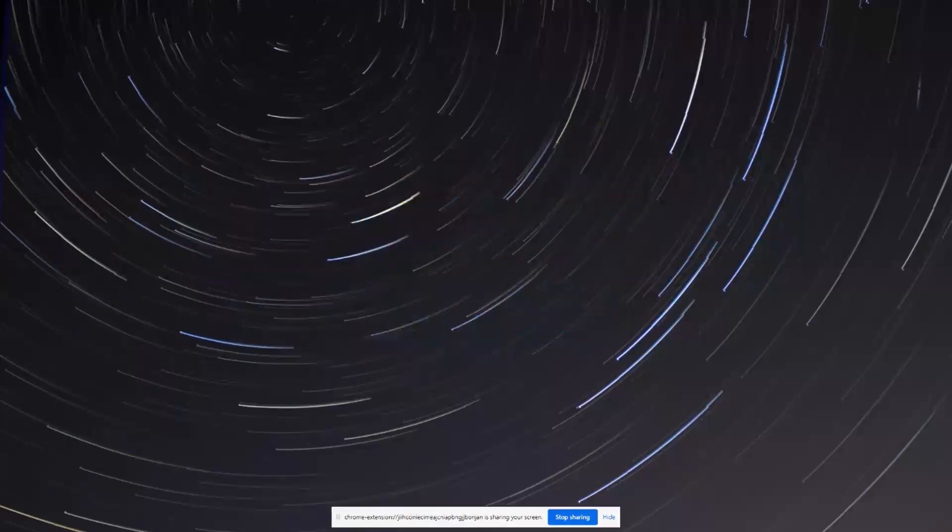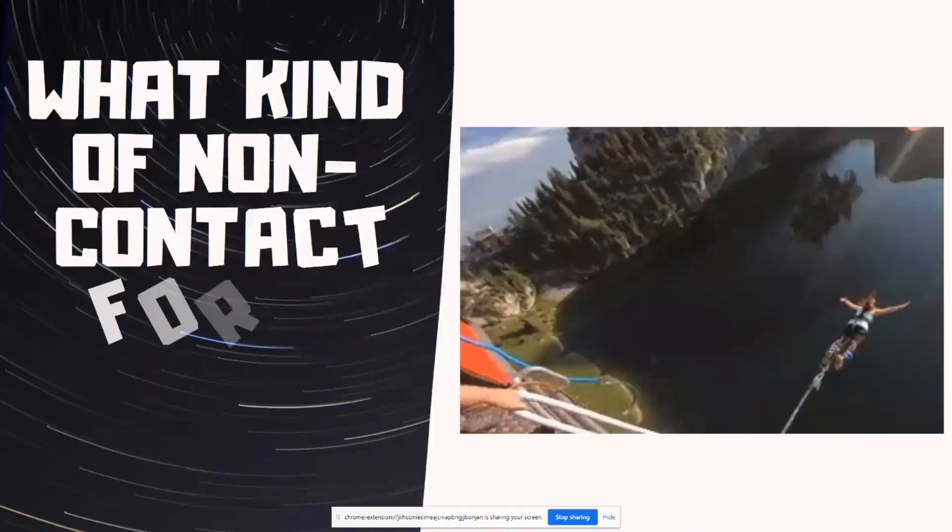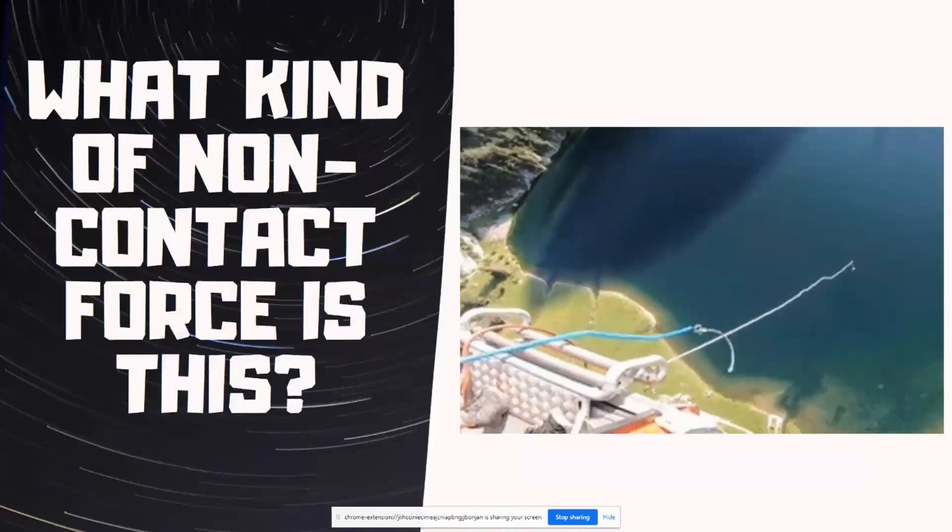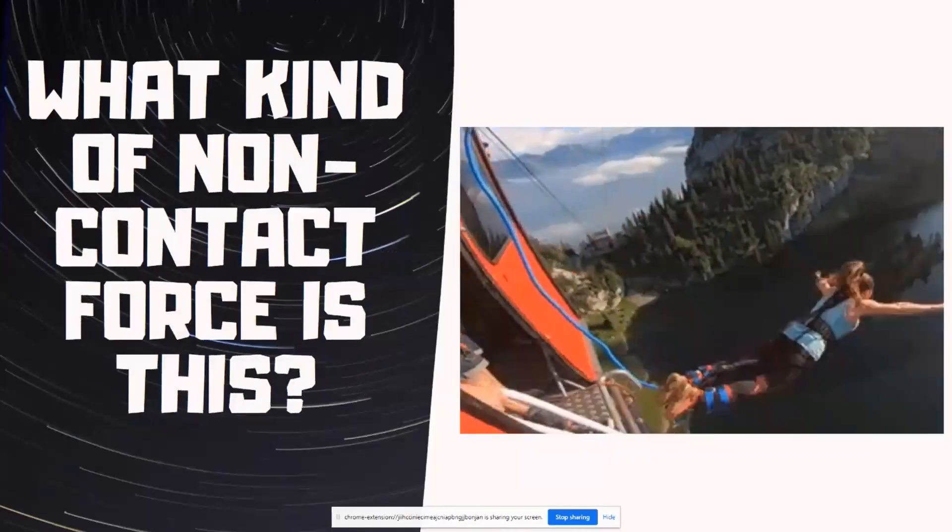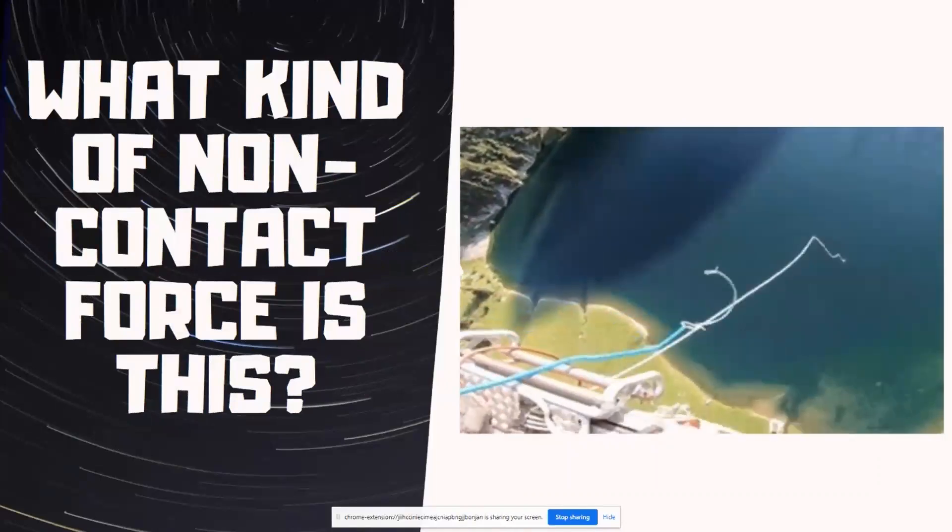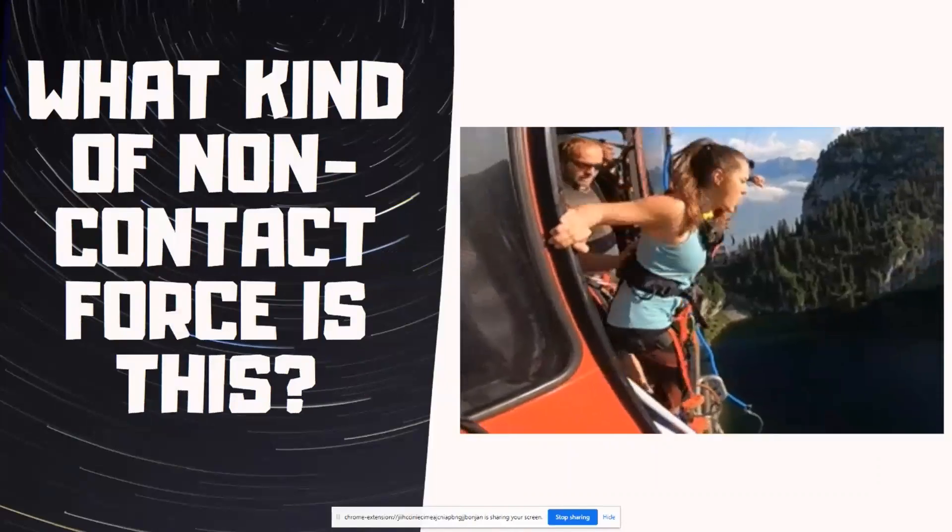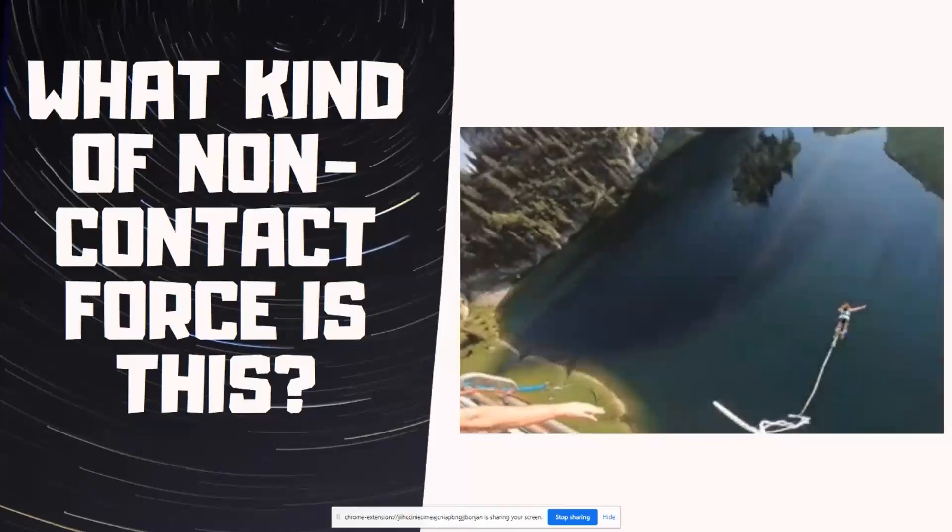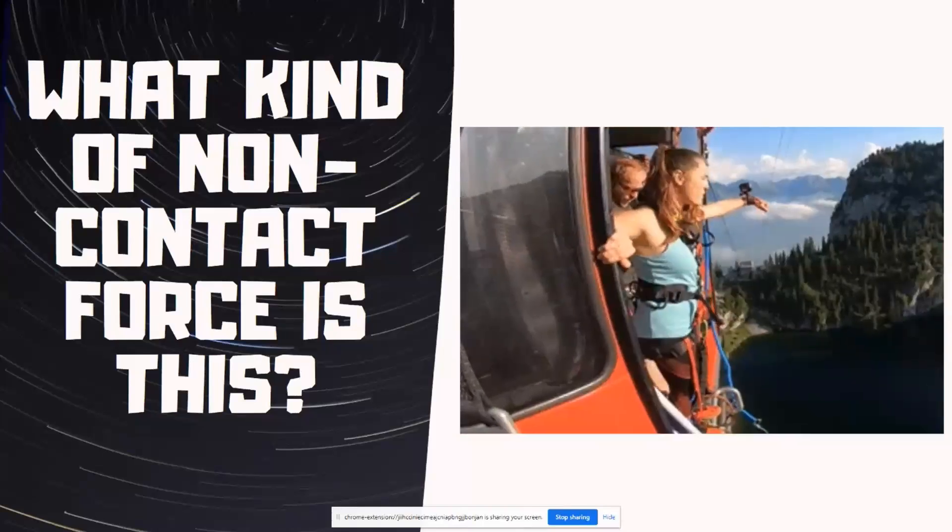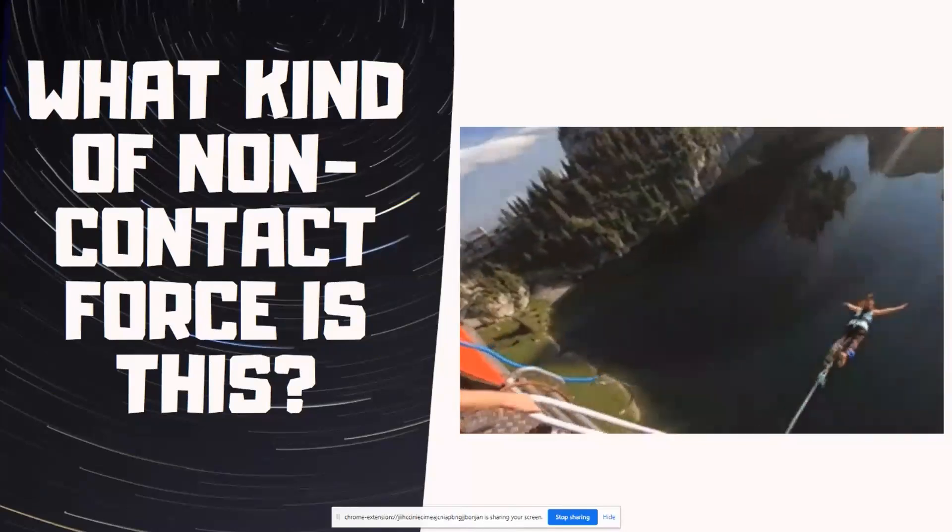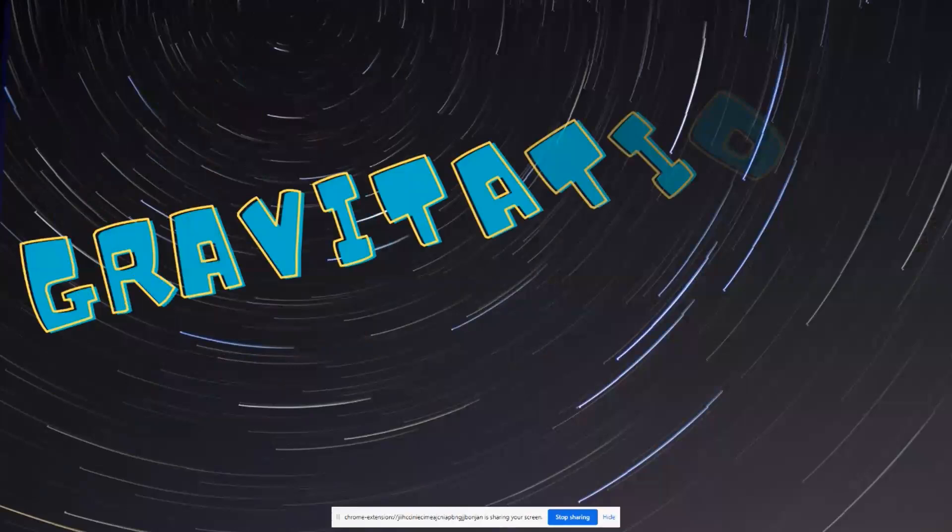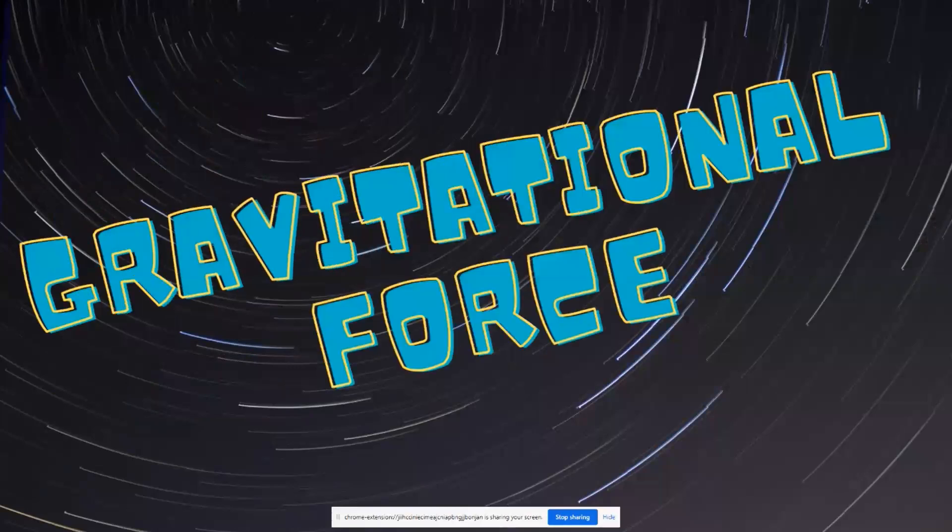Okay. Let's see this next one. What kind of non-contact force is this? Here we have someone bungee jumping. And there she goes. And she is falling. What is pulling her down? We're looking at non-contact force. What is this non-contact force that is causing her to fall? Did you say gravitational force? If you did, well done.